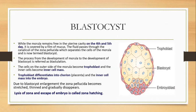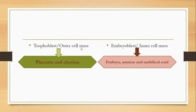The trophoblast or outer cell mass will later become the placenta and chorion — the nutritive and supportive membranes for the baby. The inner cell mass or embryoblast will later form the embryo, the amnion layer, and the umbilical cord.